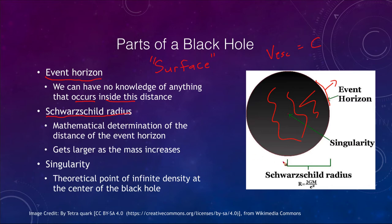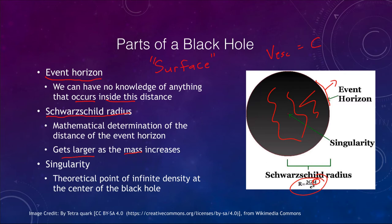In order to determine the event horizon, we can calculate what's called the Schwarzschild radius. The equation for it simply depends on the mass of the object — the mass of the black hole. It does not depend on anything else; G and C, the speed of light squared, are simply constants. So the mass is the only thing that matters. As the mass increases, the radius will get larger, and therefore the event horizon gets larger, because the Schwarzschild radius is simply the distance from the singularity at the center to the event horizon.